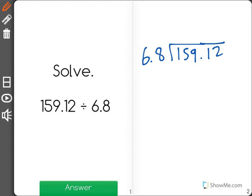what we can do is we can move that decimal point over one place in either direction. So for example, if I moved the 6.8 over to now have 68 as my divisor,